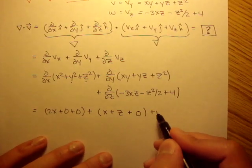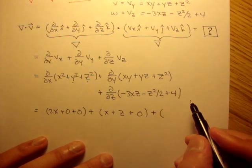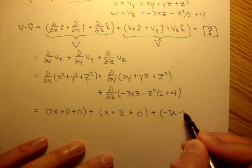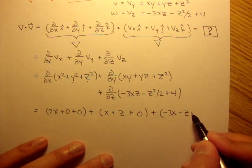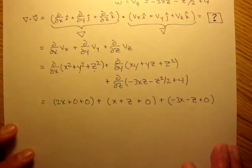And lastly, partial in respect to z of this term would give us negative 3x minus z plus 0. So we solve that out.